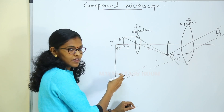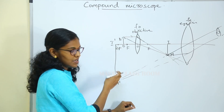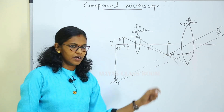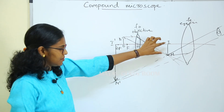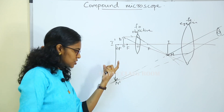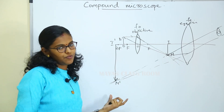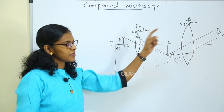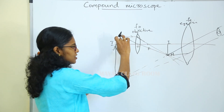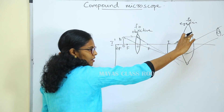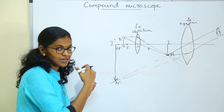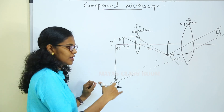The final image is a virtual image. It is an inverted and magnified image. This virtual image is observed through the eyepiece. The image formed is highly magnified, virtual, and inverted.